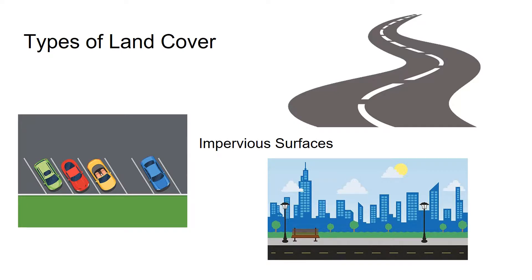Examples of impervious surfaces include pavement, roads, and parking lots, which allow rainfall to move much more quickly. Rainfall is often collected in storm drains once it runs off the surface.